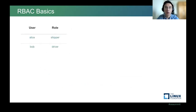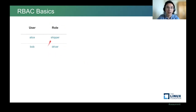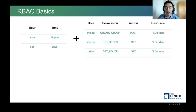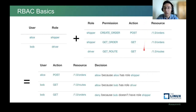To help you understand, here's a simple example. We have users Alice and Bob. Alice is a shipper — someone who has parcels to ship with us, basically the customers. Bob is a driver who drives and delivers parcels. Shipper has permission to create an order and get an order. Driver has permission to get a route. This maps naturally to a RESTful API definition.